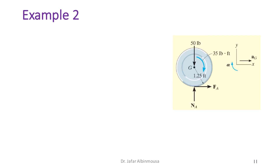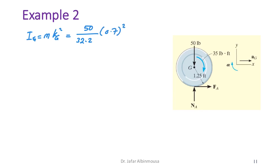We first calculate I_G = m·k_G² = (50/32.2) × (0.7)² = 0.7609 slug·ft².